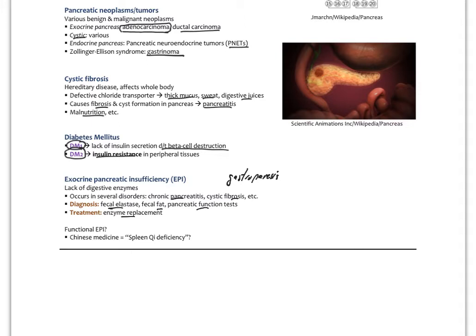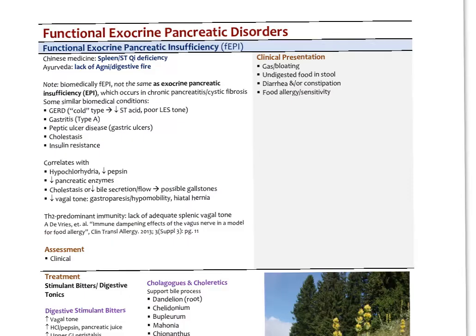There is also a more functional EPI — essentially what Chinese medicine calls spleen qi deficiency — which is not the same as the biomedical EPI seen in chronic pancreatitis or cystic fibrosis. In Ayurveda this might be called a lack of agni or digestive fire. This pattern appears frequently in the clinic, and patients given appropriate therapy seem to respond quite well.